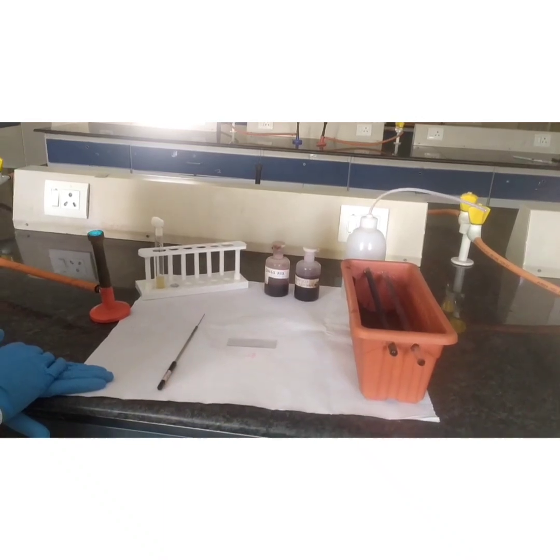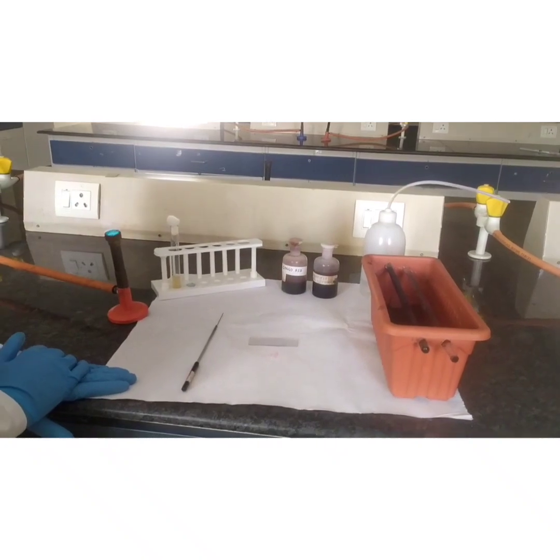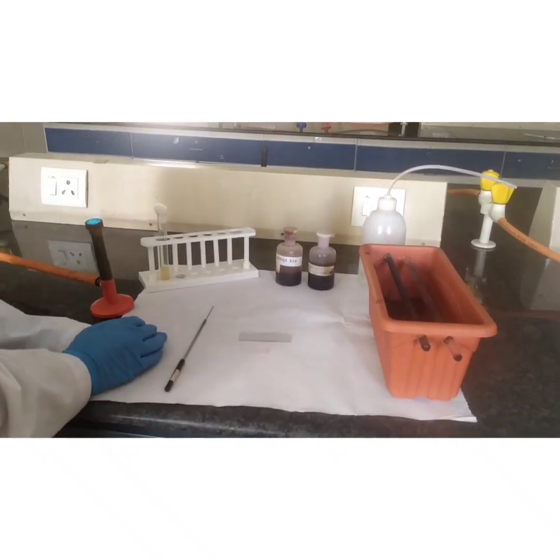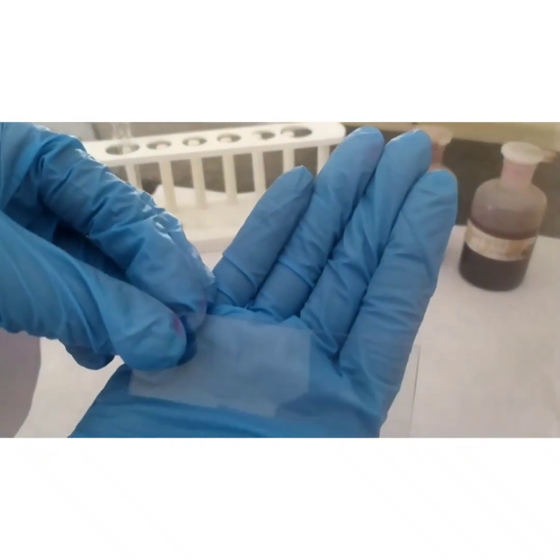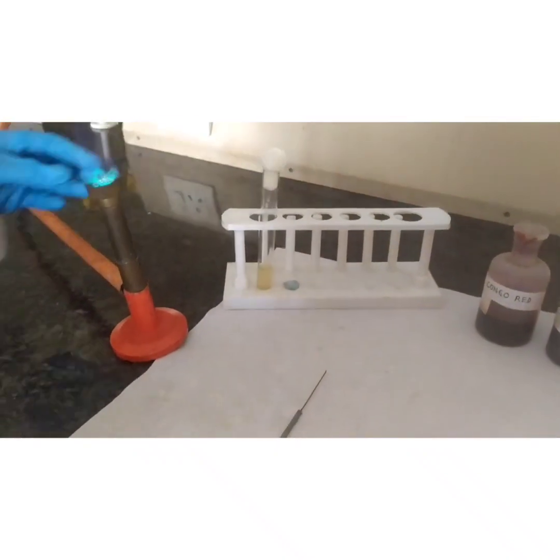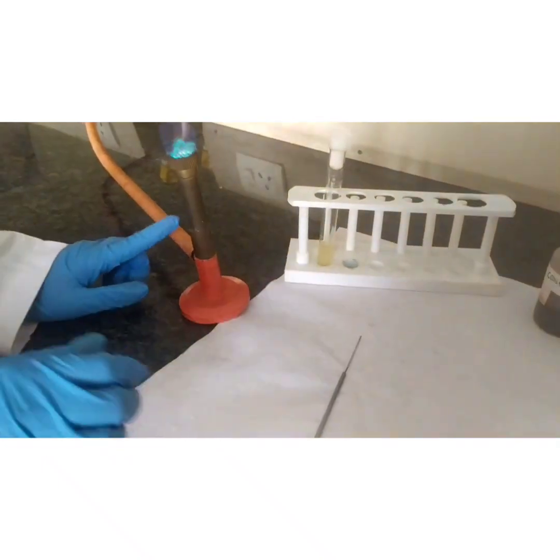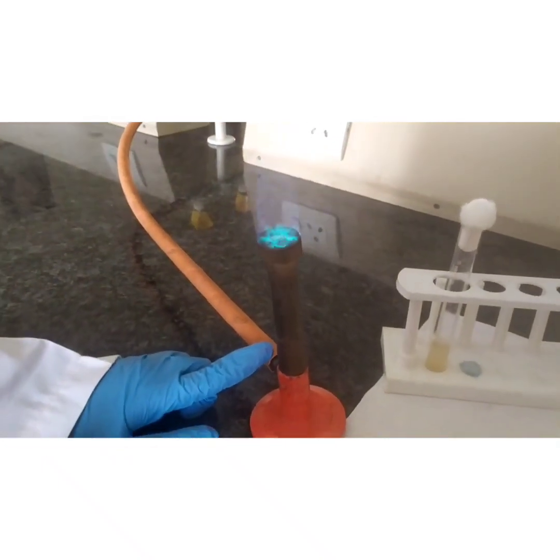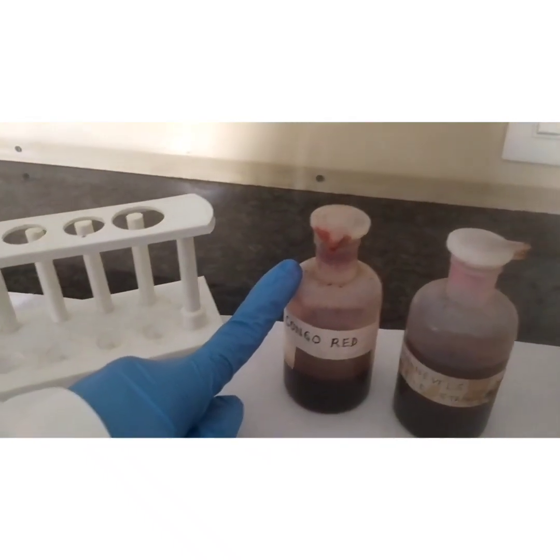Here let us see the practical representation of capsule staining. The requirements for capsule staining are a clean grease-free glass slide, bacterial culture, capsulated bacterial culture, inoculation loop, Bunsen burner, and the stains which are Congo red and Maniwal stain.